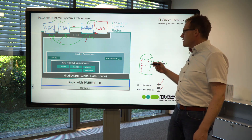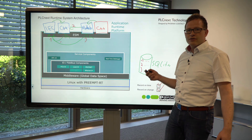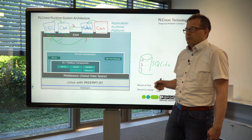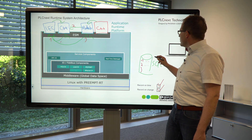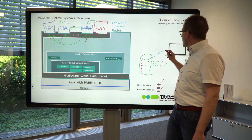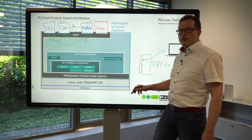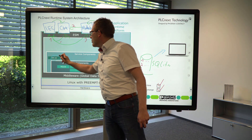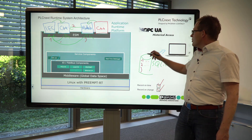Now you have a database on the PLC and you may ask yourself: what can I do with that? Quite simple. You can copy the database to your PC, or you can use the embedded OPC UA server to get the historical values.